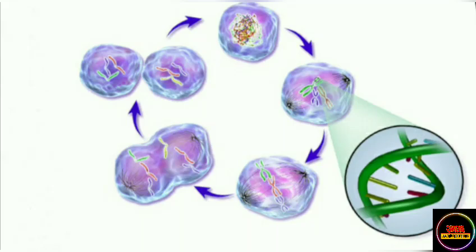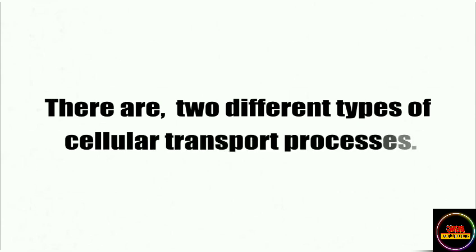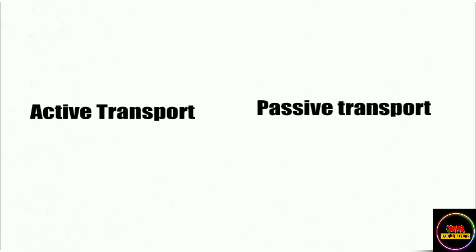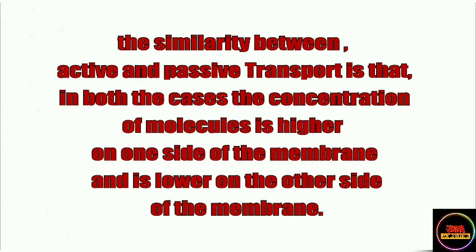There are two different kinds of cellular transport: active transport and passive transport. A similarity between them is that in both cases the concentration of molecules is higher on one side of the membrane and lower on the other side.